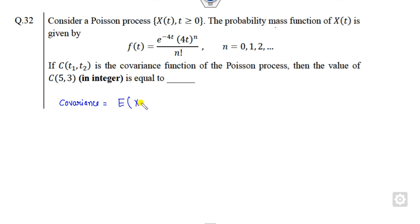We all know the covariance is here. This is the covariance definition. The first method you can try to solve this problem is here. These are the two values t₁ and t₂.